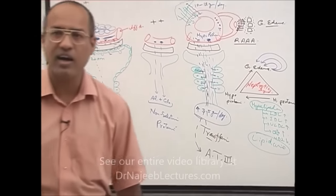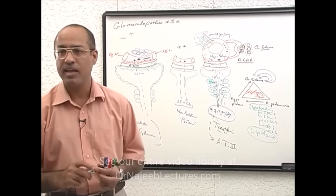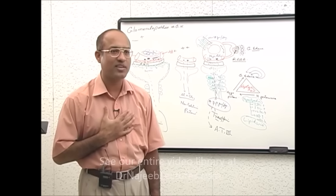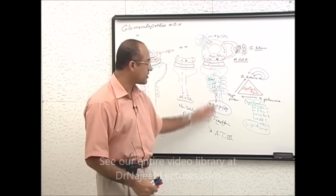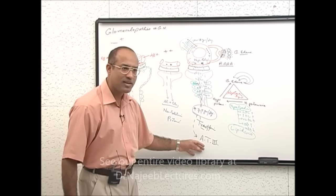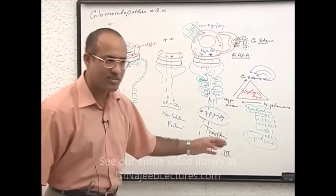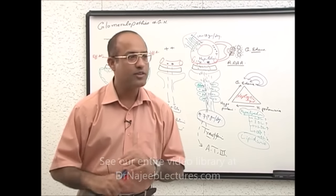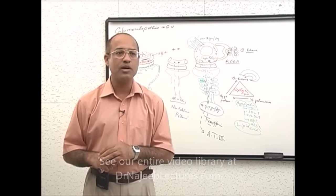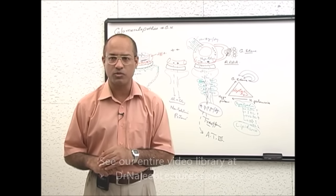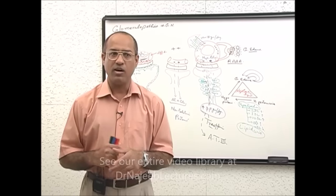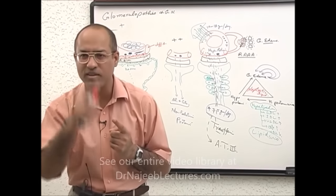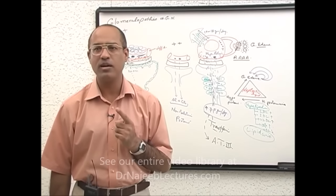Another protein that leaks down is antithrombin 3 — a protein which prevents undue thrombogenesis in the blood. Antithrombin 3 is a thrombin-cutter: it destroys some activated coagulation factors. It is a small molecular weight protein, so it is lost into urine. When this anticoagulant protein is lost into urine for a long time, blood becomes pro-coagulant, and the patient will develop thrombosis more readily. Many patients with nephrotic syndrome develop thrombosis in the veins, especially renal vein thrombosis.